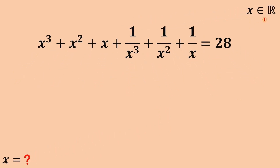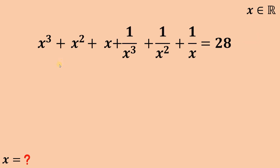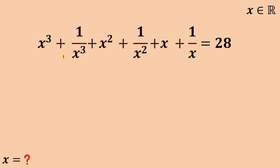Alright. Now, x here is a real number that satisfies this equation, and our goal is to solve for the value of x. To answer this question, what we're going to do is rearrange some terms. So let's combine x cubed plus 1 over x cubed, x squared plus 1 over x squared, and x plus 1 over x.